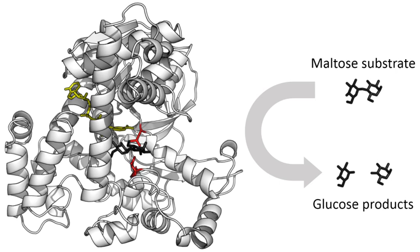The discovery that enzymes could be crystallized eventually allowed their structures to be solved by X-ray crystallography. This was first done for lysozyme, an enzyme found in tears, saliva and egg whites that digests the coating of some bacteria. The structure was solved by a group led by David Chilton Phillips and published in 1965. This high-resolution structure of lysozyme marked the beginning of the field of structural biology and the effort to understand how enzymes work at an atomic level of detail.